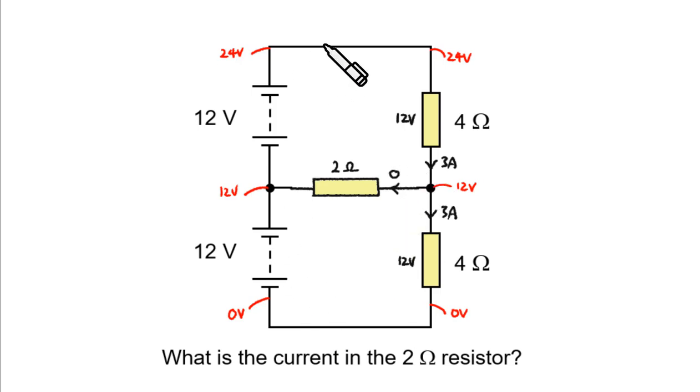So, the solution for the circuit without this 2 ohm resistor is also the solution for this circuit with the 2 ohm resistor. Okay, puzzle solved.